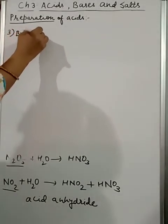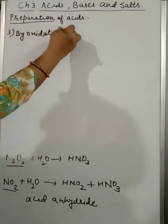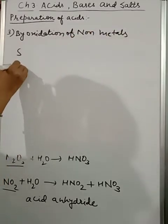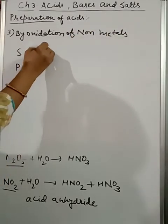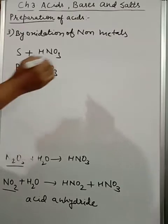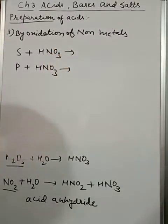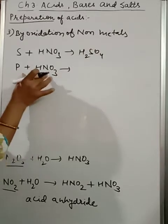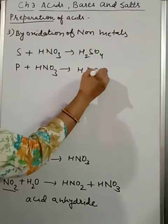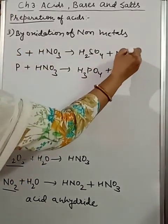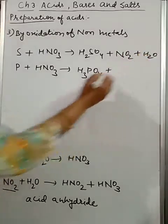Third point is by oxidation of non-metals. In this case, generally we are using sulfur and phosphorus. What acid are we taking? HNO3, which is highly corrosive as well as a strong oxidizing agent. In both these cases, first related to sulfur, we will get sulfuric acid H2SO4.